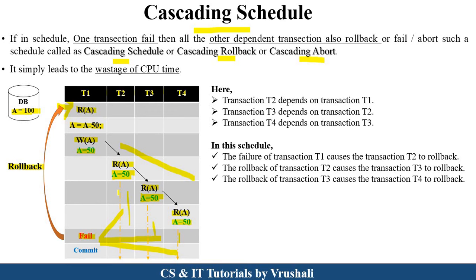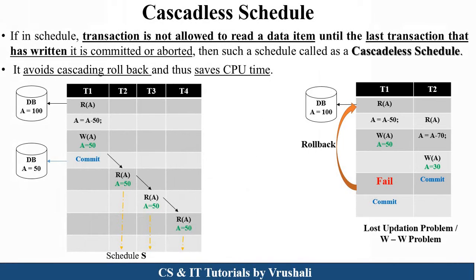This problem is solved by the cascadeless schedule. The property of cascadeless schedule is: another transaction reads the data item written by a transaction only after that transaction's commit step. For example, with four transactions T1, T2, T3, and T4 — T1 reads A equal to 100, performs A = A minus 50 to get 50, writes A equal to 50, and then performs a commit operation. Commit means the updated value is permanently stored in the database. Only after commit does another transaction read the value. This is called a cascadeless schedule.